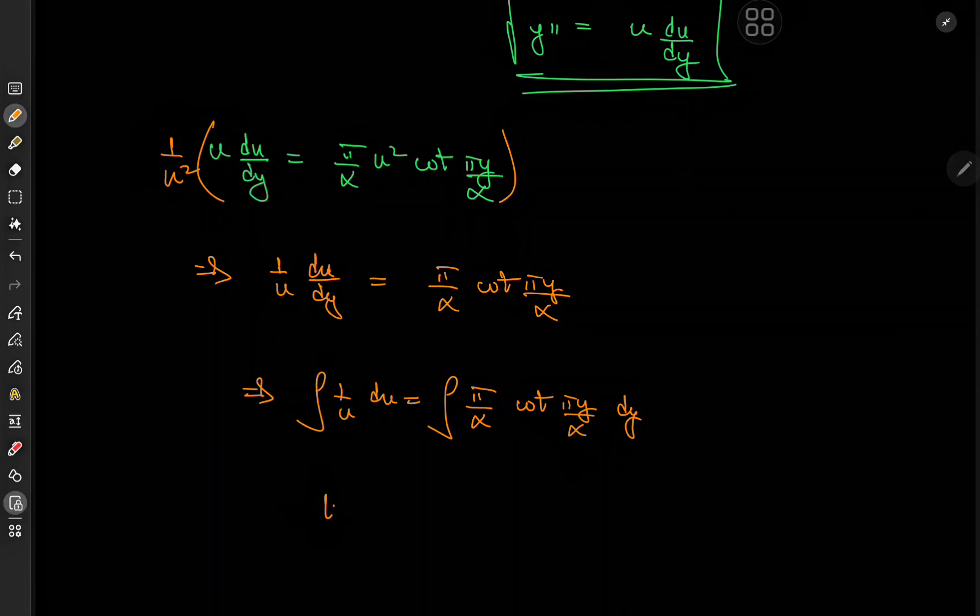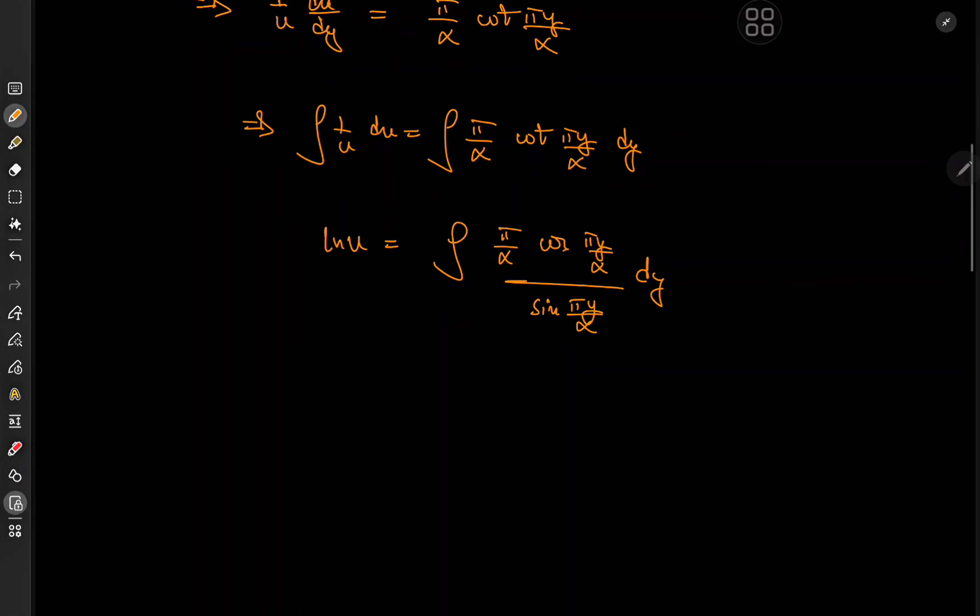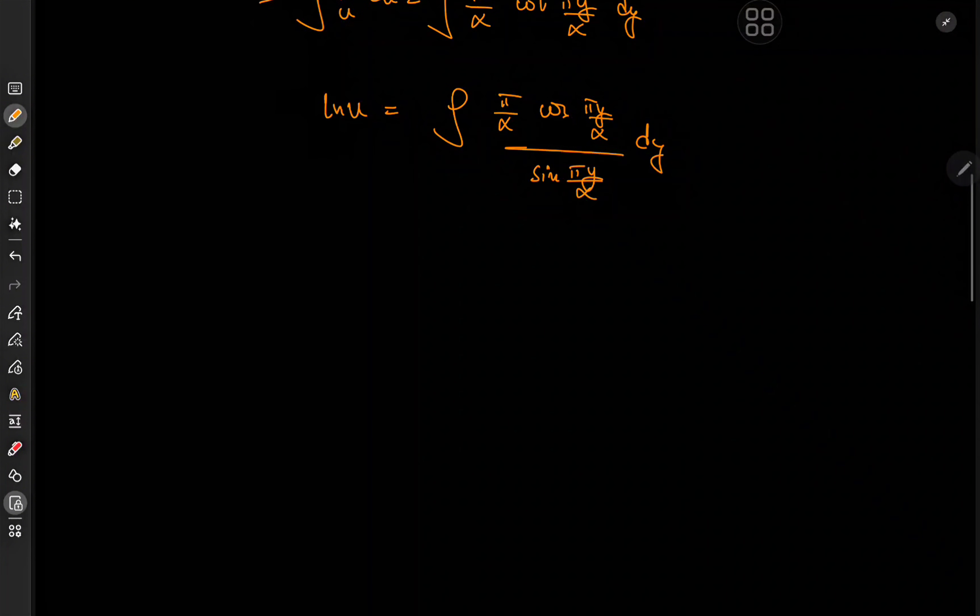So on the left we have the logarithm of u, and on the right we have the integral of pi over alpha cosine of pi y over alpha over the sine of pi y over alpha. And the constant term up front is a matter of convenience because now we have sine and its derivative up top, so that means we should get log of sine on integrating. So the result is log of sine of pi y over alpha.